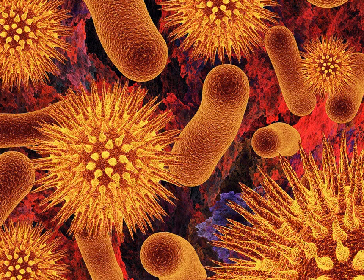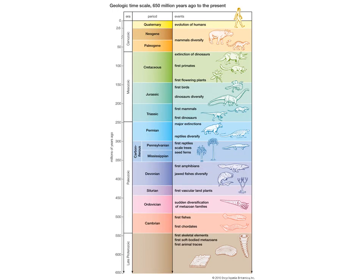The first single-celled organisms with a nucleus appeared about 2 billion years ago. As you can see on the timeline, it was a really long period of time until those first complex life forms arose. This timescale goes up to 650 million years ago, and here you can see where we find the most primitive life forms of which we can find fossils today.